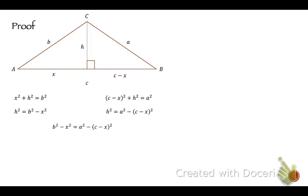And then I can just set those equal to each other because they're both equal to H squared. So that's B squared minus X squared equals A squared minus C minus X squared. I'm going to square out that C minus X so that's C squared minus 2CX plus X squared which then I distribute that subtraction sign so it's B squared minus X squared equals A squared minus C squared plus 2CX minus X squared.